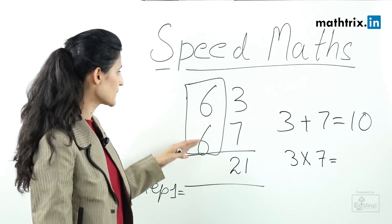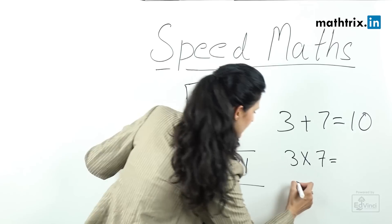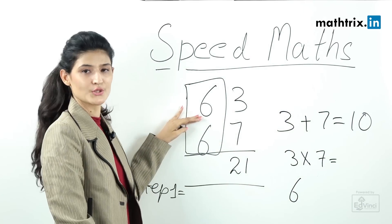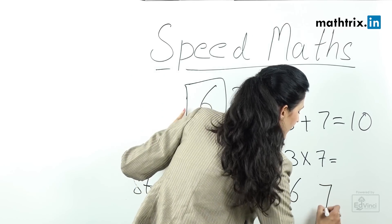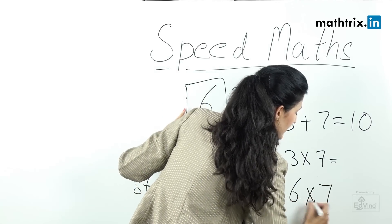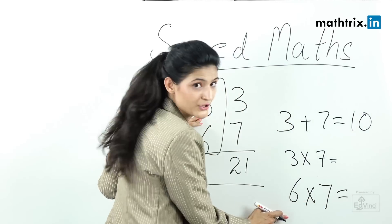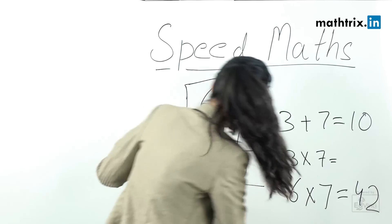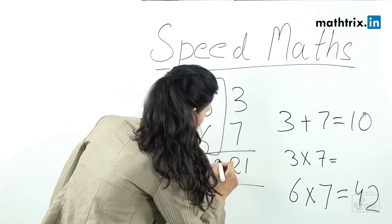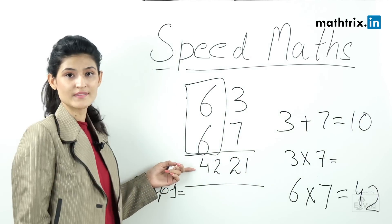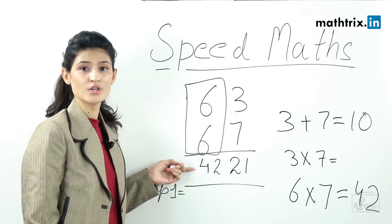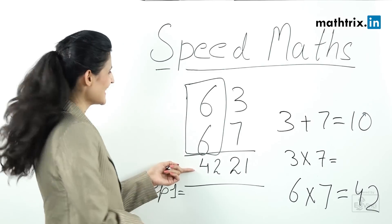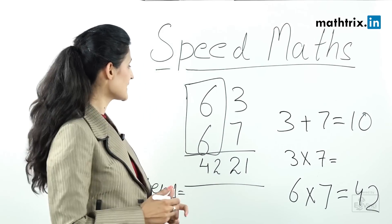To get the remaining part of the answer, take the common number 6 and multiply it by the next integer, which is 7. So 6 × 7 = 42. Place 42 in front, and your final answer is 4221. You can cross-check this with a calculator.